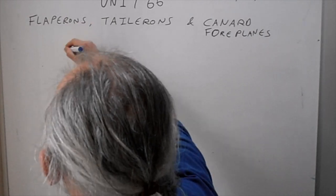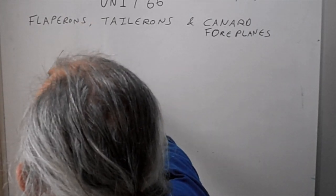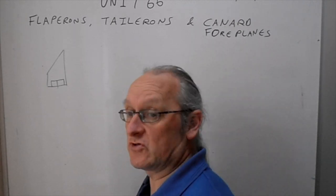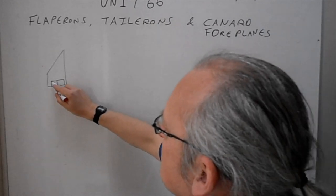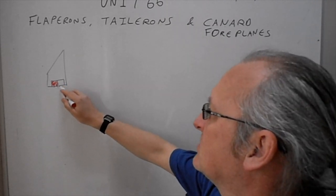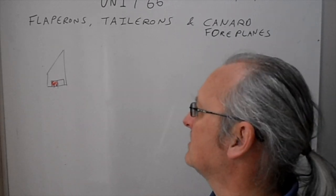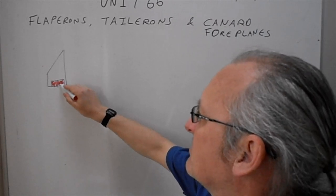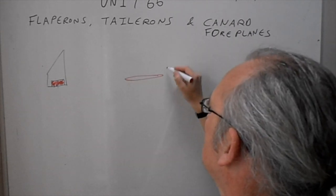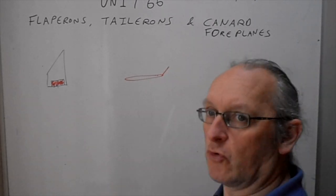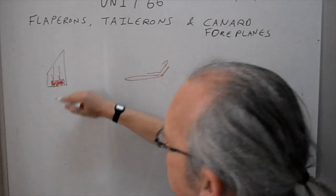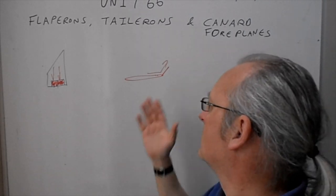For your standard flaperon — we'll pick the Typhoon — you've got an inboard and outboard flaperon. Previously if you just had ailerons and standard flaps, when you went to manoeuvre you only had that red area. Now because you've employed these, they can go up as well as down and activate as ailerons or flaps. You've almost doubled the surface area on the back of the wing that you can use for maneuverability.